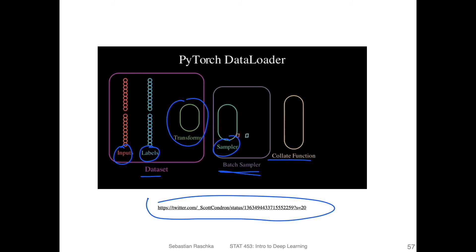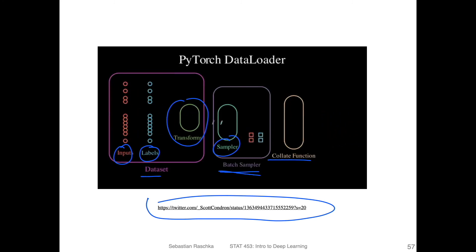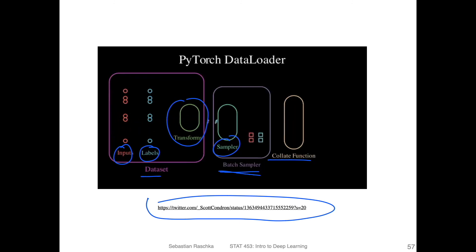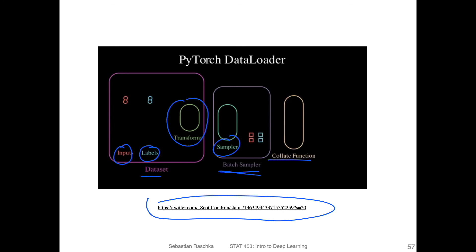The inputs and labels go through the transform and through the sampler, get collected in the batch sampler, and once a batch is ready it goes to the collate function to produce a batch of inputs and a batch of labels — then it does the next batch. Importantly, it's sampled without repetition, so each sample is used exactly once per epoch. Once finished, we start another epoch, and samples are chosen randomly — essentially equivalent to shuffling. There's a parameter called 'shuffle' — if enabled, samples are chosen in a different order each epoch. That's conceptually how the PyTorch DataLoader works.